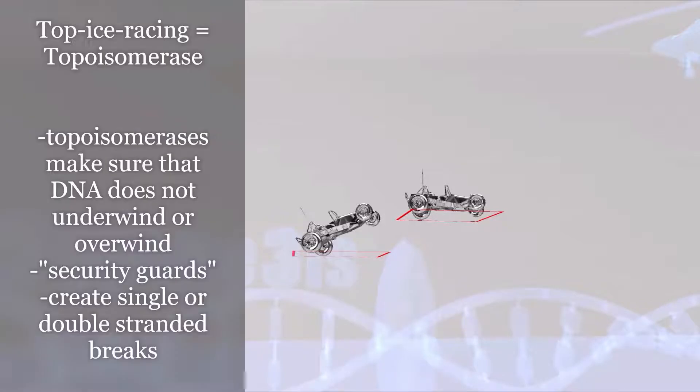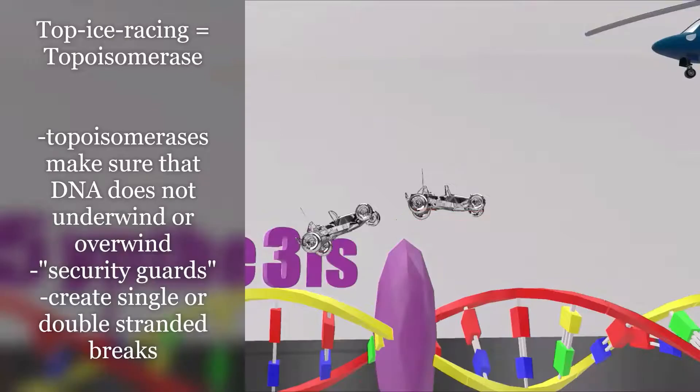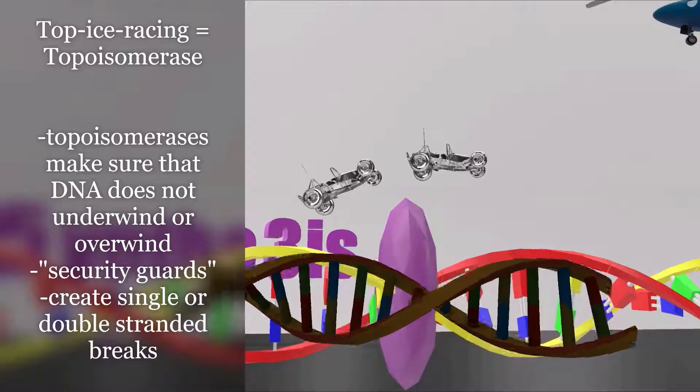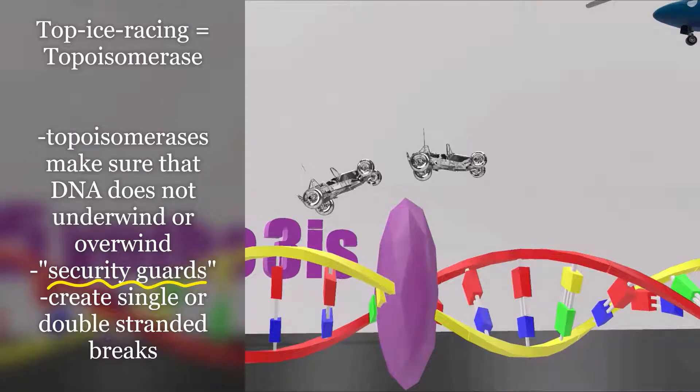Top ice racing for topoisomerase. The top ice racing cars make sure that the DNA that was just replicated does not underwind or overwind. You could call them the security guards.